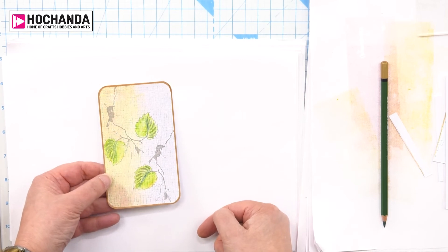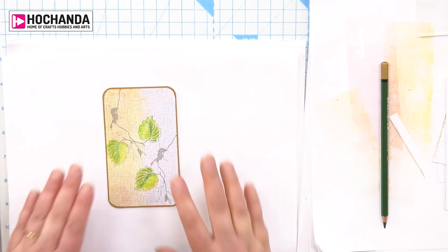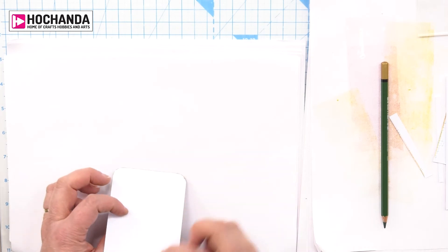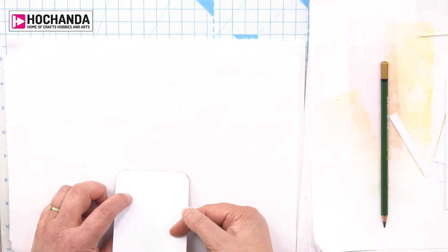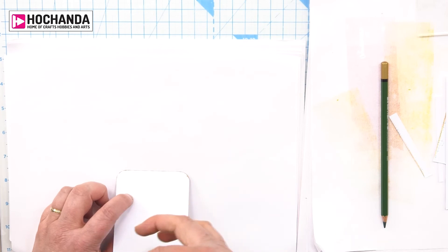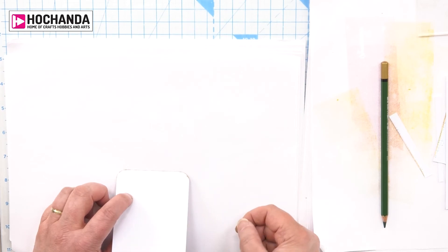Basically that is your journal card done. If you've made a mess on the back or got inky fingers, use a piece of white paper, attach it to the back and trim round it just so you have somewhere to write all those lovely thoughts and ideas that you want to put into your journal.